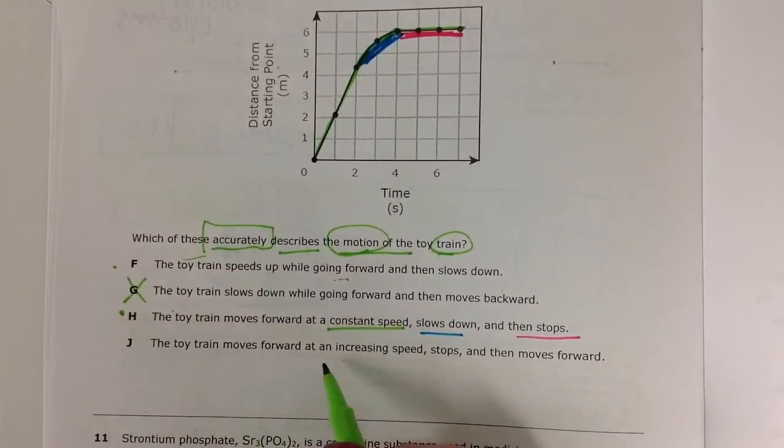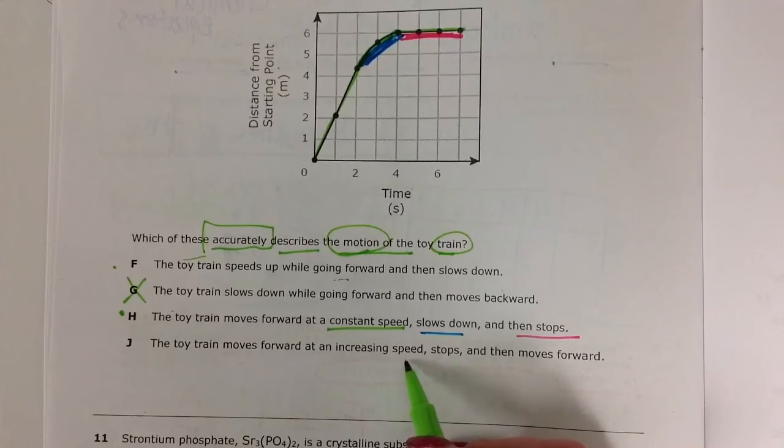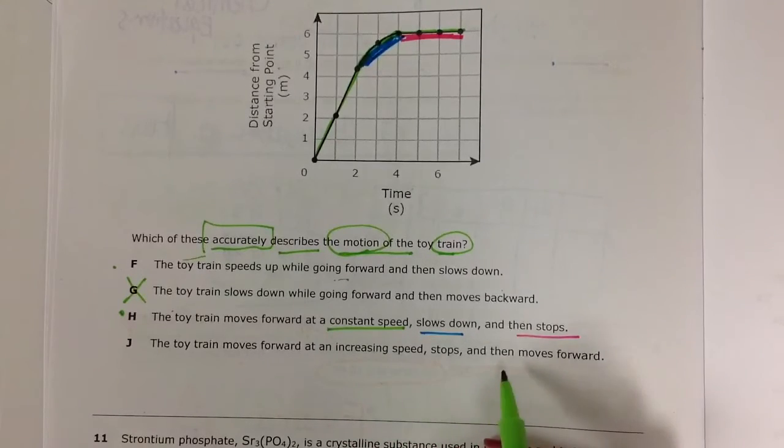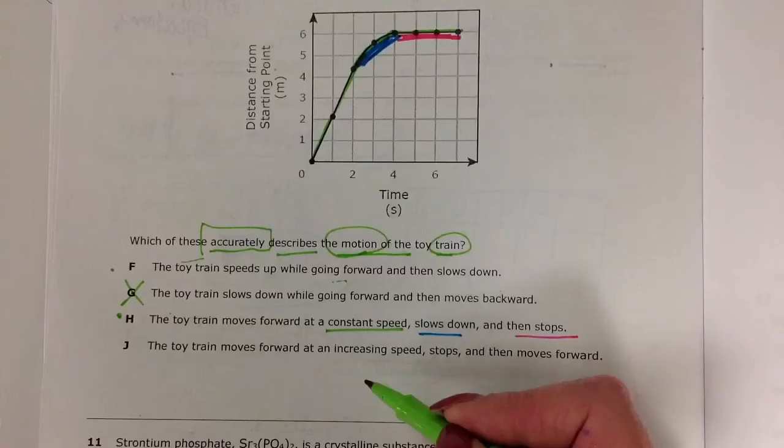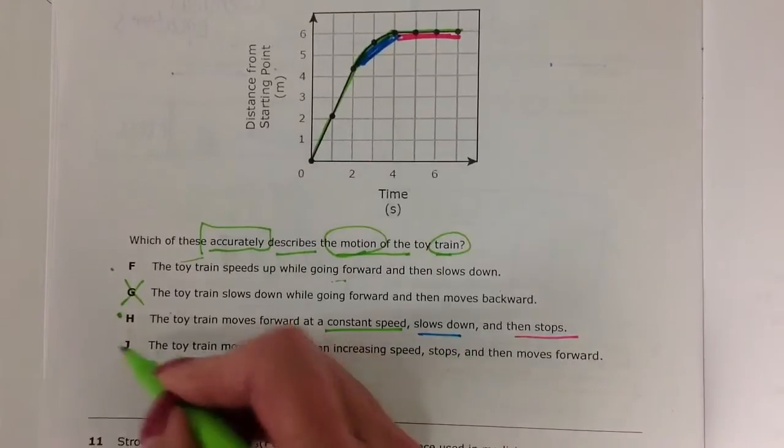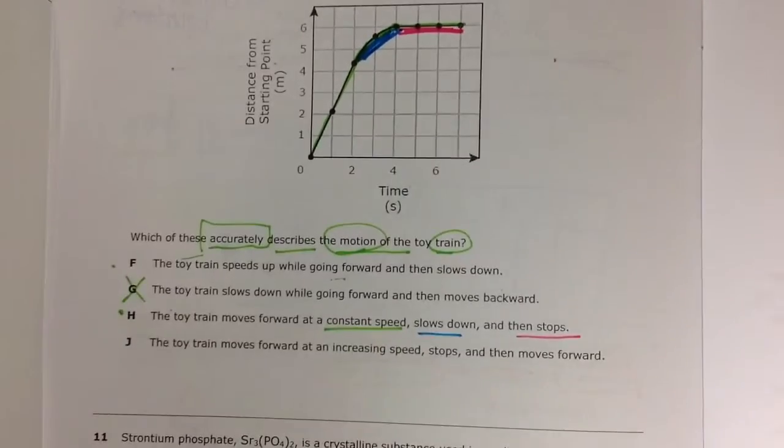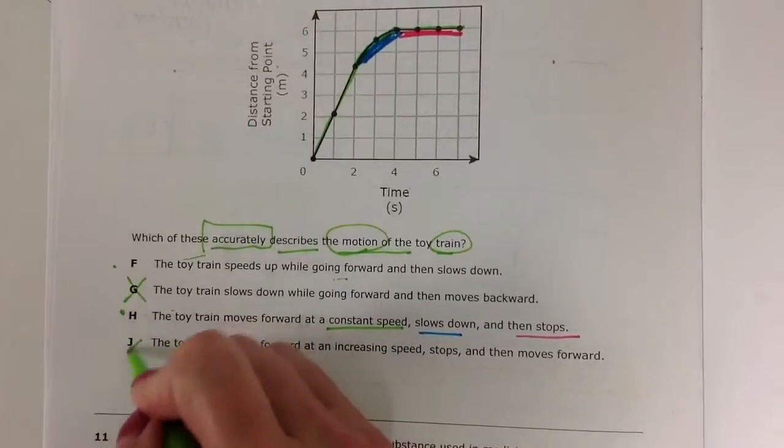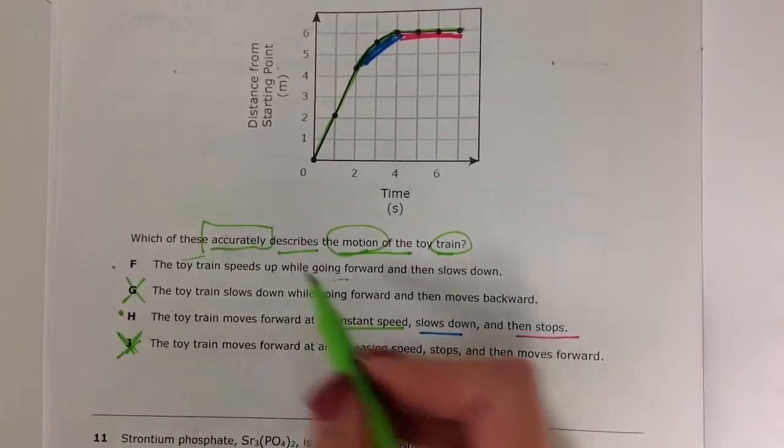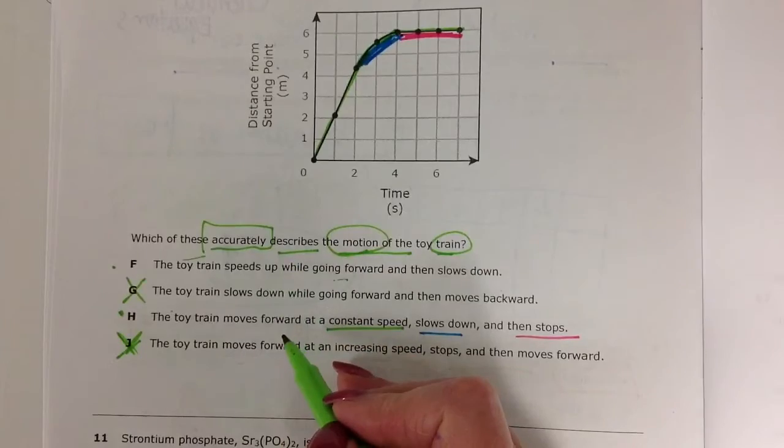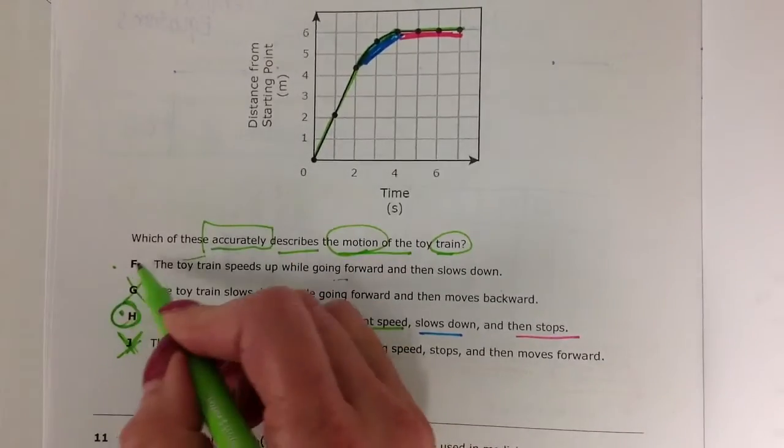The toy train moves forward at increasing speed, stops, then moves forward. Well, it doesn't increase in speed and stop. So we know and then start again. That's not what the graph is showing us. So we know that is incorrect. So the most accurate description is definitely going to be H.